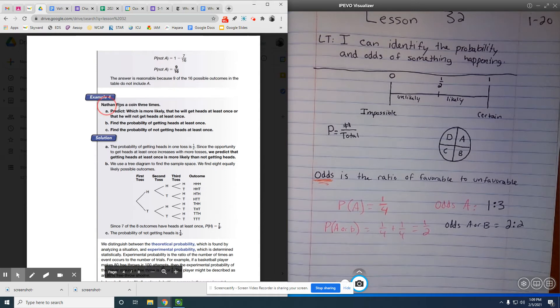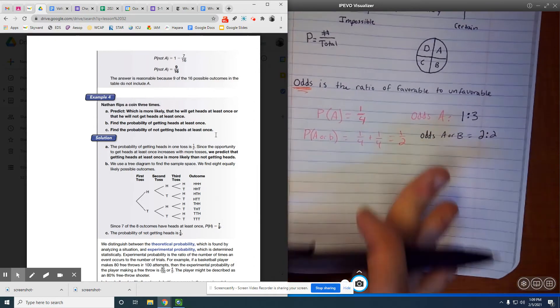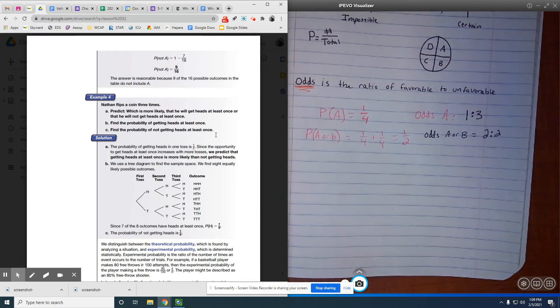I'm going to look at number 4. Nathan flips a coin 3 times. Predict which is more likely, that he will get heads at least once, or that he will not get heads at least once. Find the probability of getting heads at least once. Find the probability of not getting heads at least once.